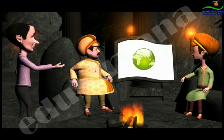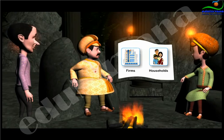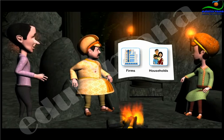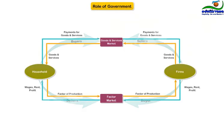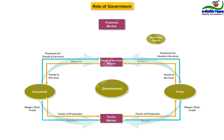Our discussion of the circular flow diagram was focused on two basic entities: firms and households. Let's now understand the role of three important players — government, financial markets, and the rest of the world — from a circular flow diagram perspective.